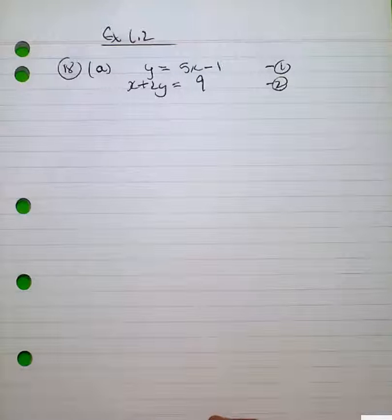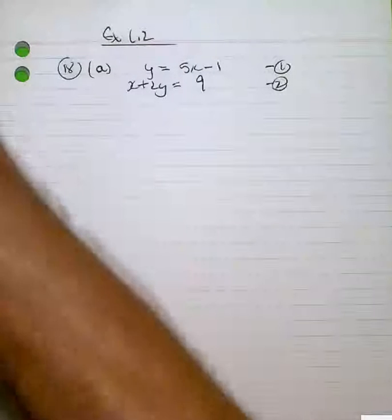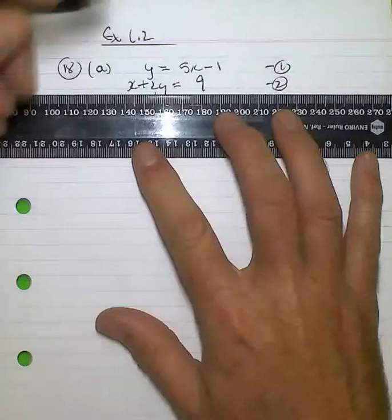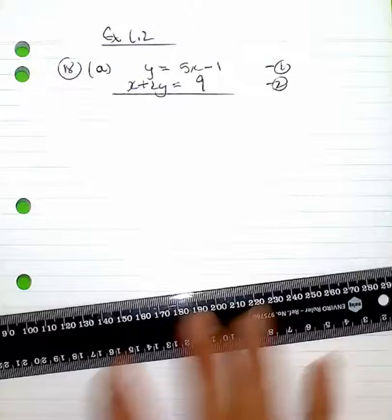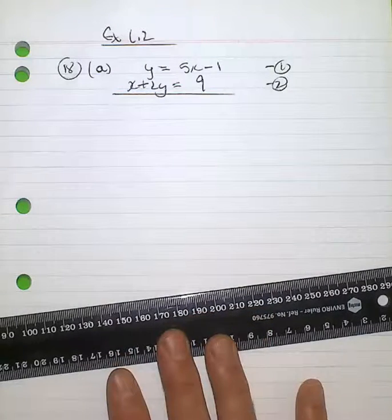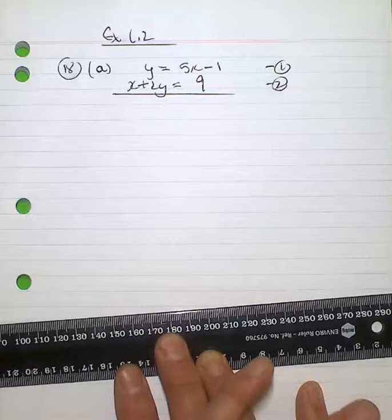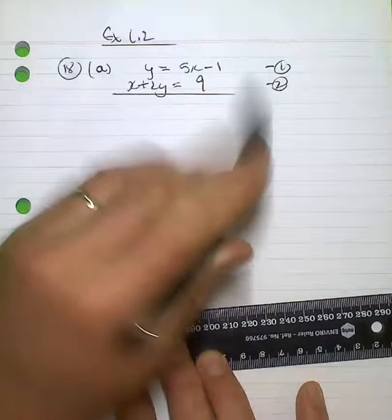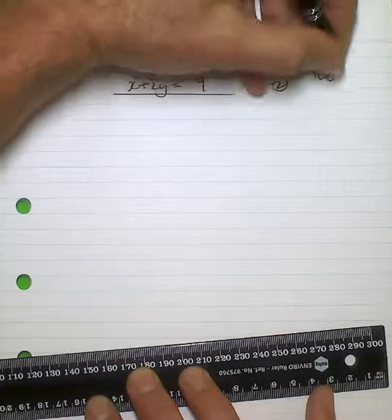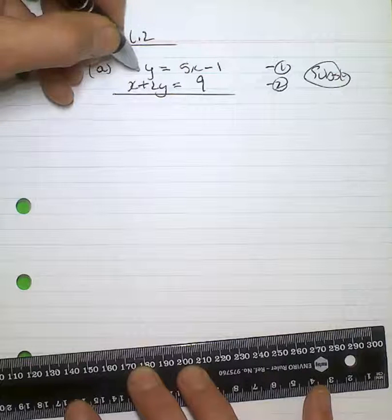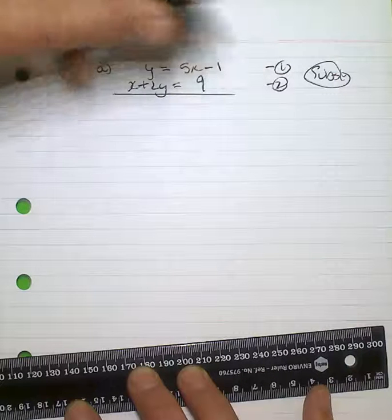In exercise 1.2.18, you're given a variety of simultaneous equations and asked to solve them using either the elimination method or the substitution method. In this first instance, 18a, this is clearly a substitution case. I'm going to substitute y = 5x - 1 into equation 2.